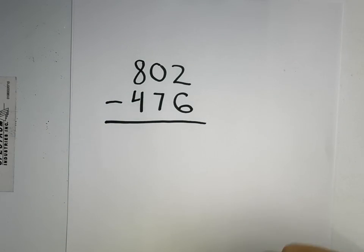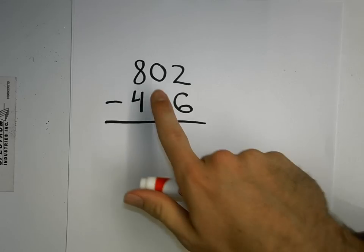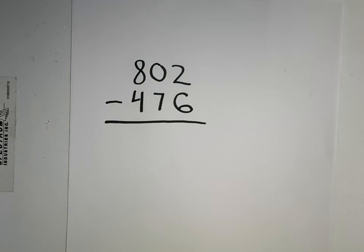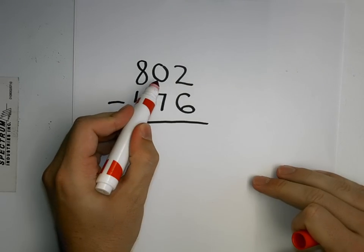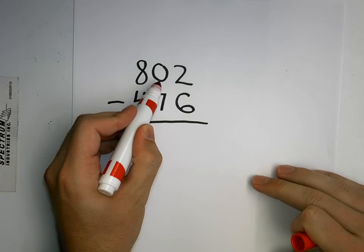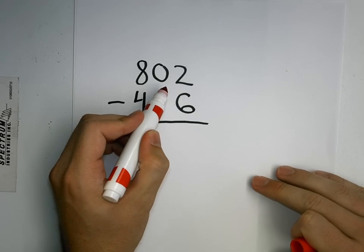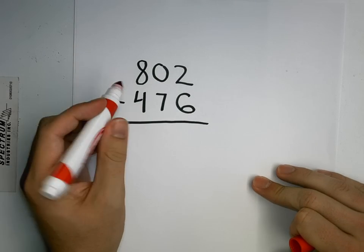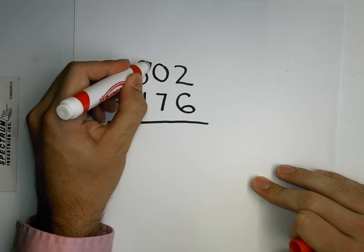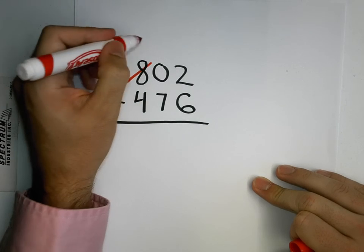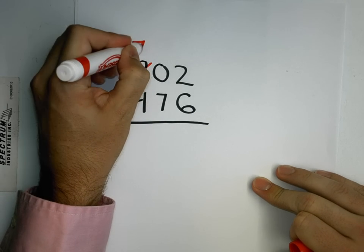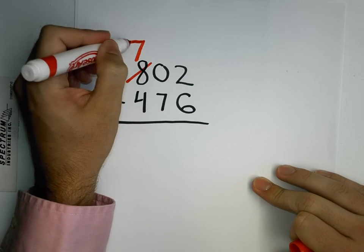And normally I just go right over to the tens place, but in the number 802, I do not have any in the tens place that I can regroup and move over. So I have to go all the way to the hundreds place. I'm going to regroup a hundred, so I'm going to take apart one of my groups of 100.